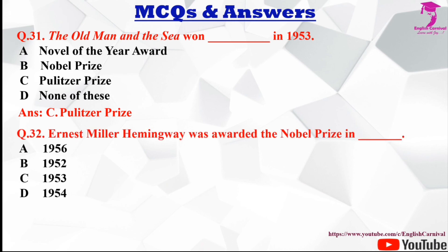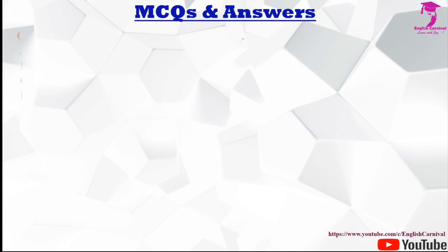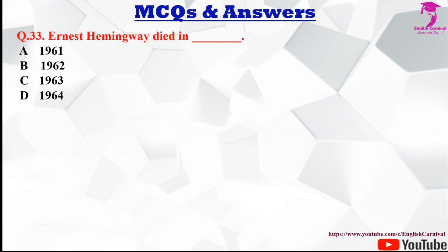Question number thirty-two: Ernest Miller Hemingway was awarded the Nobel Prize in dash. Options are A 1956, B 1952, C 1953, and D 1954. The correct answer is D, 1954.